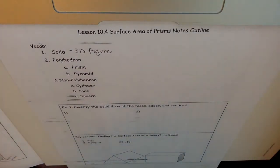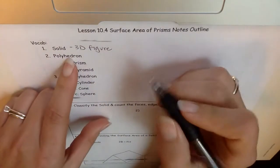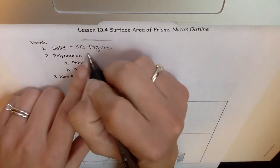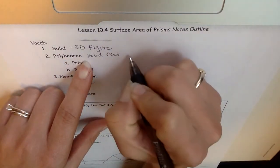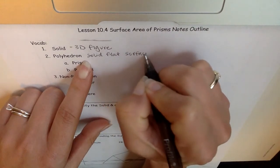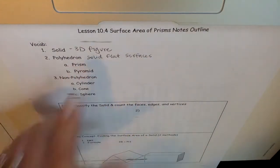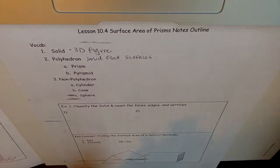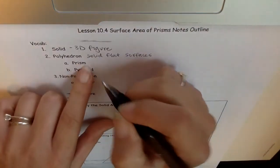We break up solids into polyhedrons and non-polyhedrons. A polyhedron is a solid with flat surfaces, flat faces, no curves and no round faces. The two primary polyhedrons we will talk about this year are prisms.